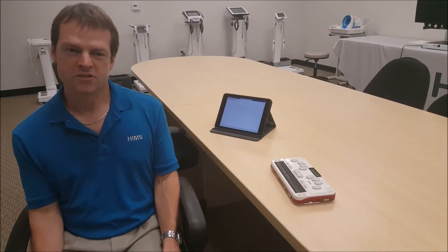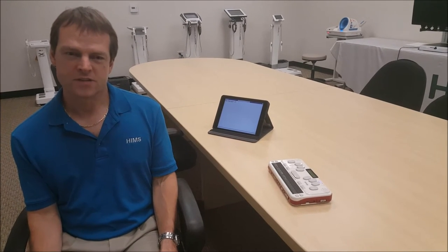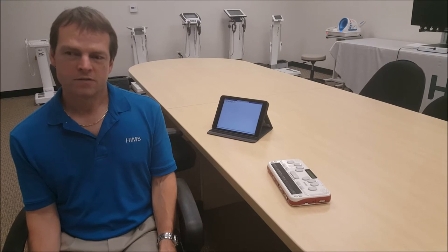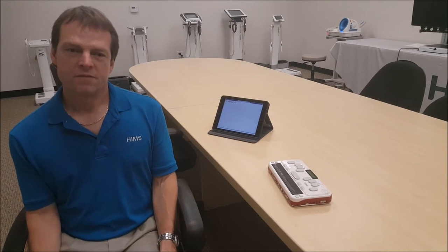For example, the shortcut key to load the optional HIMSS dictionary is enter, backspace, D. If I was writing this using one-handed mode, I would press the enter key, the backspace key, dots 1, 4, and 5, and then press the space bar to conclude the keyboard entry.